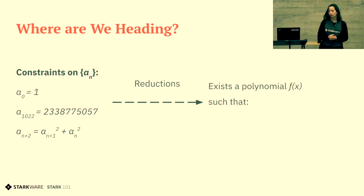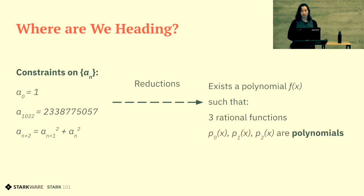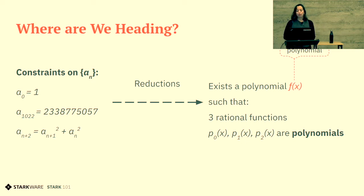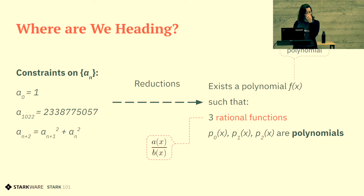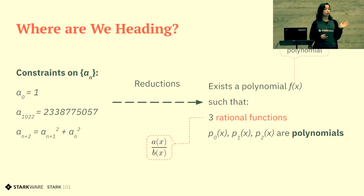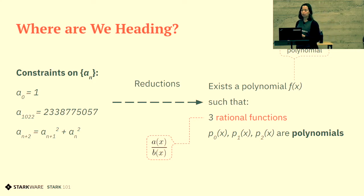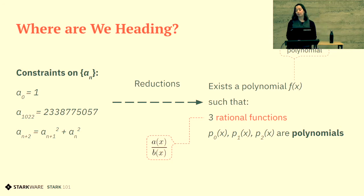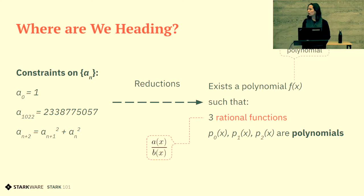The new statement is the following: we will show that there is a polynomial F such that three rational functions created from this F — P0, P1, and P2 — are polynomials. F is going to be the trace polynomial you computed. A rational function is a mathematical object in the form of a polynomial divided by a polynomial. Sometimes this object is actually a polynomial, just like integers and rational numbers — for example, 4 divided by 2 is 2, but 3 divided by 2 is not an integer. So our statement is that there is a polynomial F such that three rational functions are actually polynomials.